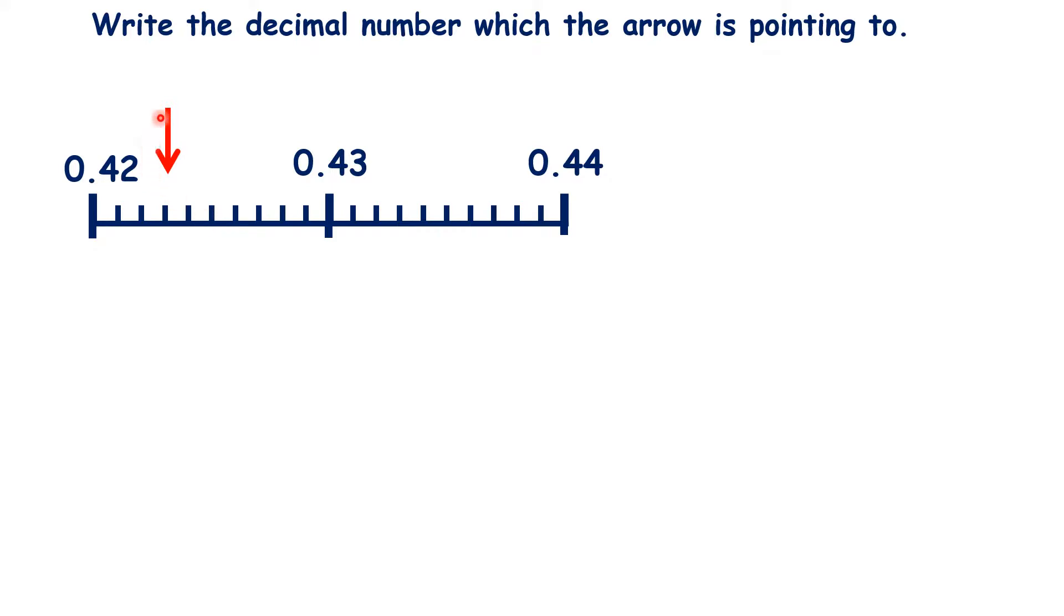So here we're going to need a decimal number with three decimal places. We're three lines in, so we have the number 0.423.